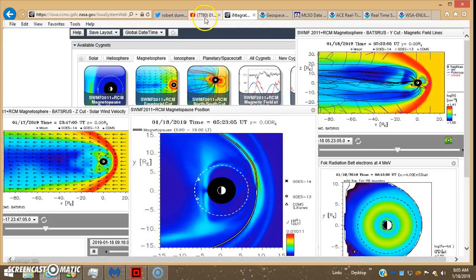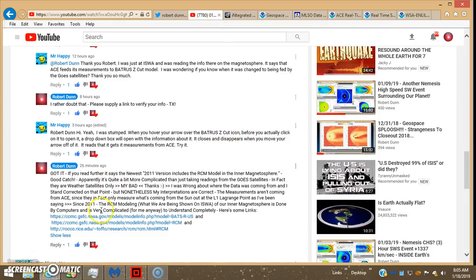I looked into this RCM model - here's what I put underneath for the final answer. Got it. If you read further it says the newest 2011 version includes the RCM model in the inner magnetosphere. Good catch. Apparently it's quite a bit more complicated than just taking readings from the ghost satellites. In fact they are weather satellites only. My bad, thanks. I was wrong about where the data was coming from and I stand corrected on that point. But nonetheless my interpretations are correct. The magnetosphere measurements aren't coming from ACE since they in fact only measure what's coming from the Sun out at the L1 Lagrange point as I've been saying.